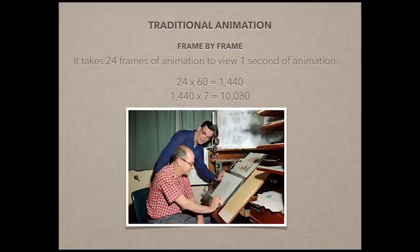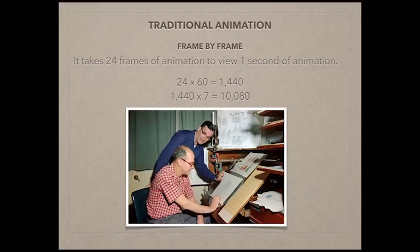If we were to multiply 24 times 60, you get 1,440, and that is how many pictures or camera shots are taken in one minute of animation. The average time was about seven minutes for a cartoon, so we're looking at 10,080 camera shots for seven minutes of animation.